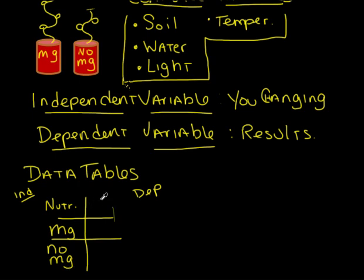I can measure their height in centimeters. And the one with miracle grow grew 25 centimeters let's say. And the one with no miracle grow grew 12 centimeters. Because I put my units up here I don't have to include it every time with my data table.